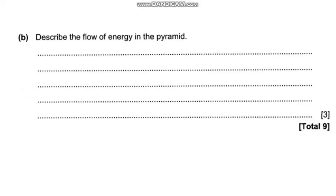Here we have question B. The question reads: describe the flow of energy in the pyramid. The sun is the primary source of energy. Plants absorb solar energy and convert it into energy-containing compounds — they are the producers. This energy is then transferred to the primary consumers after they have eaten the plants. Primary consumers can then be eaten by secondary consumers, who obtain only about 10% of the energy. The other 90% is lost through respiration, growth, movement, egestion, and excretion.